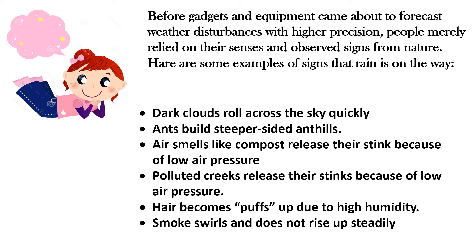Before gadgets and equipment came about to forecast weather disturbances with higher precision, people merely relied on their senses and observed signs of nature. Here are some examples of signs that rain is on the way: dark clouds rolling across the sky quickly.